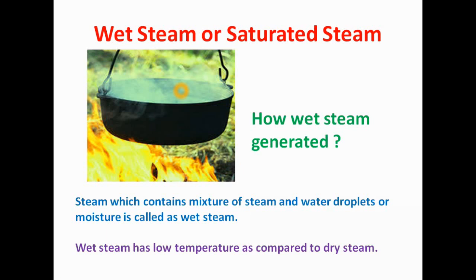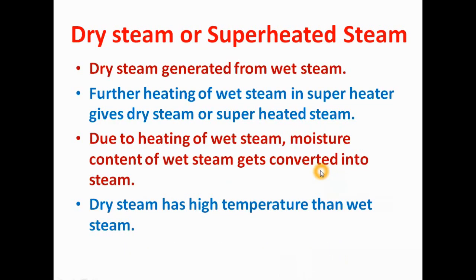When this steam comes in contact with the environment, it starts to condense. Due to condensation, the water droplets or moisture content in the steam starts increasing. This is how wet steam is generated. Wet steam has a low temperature as compared to dry steam.